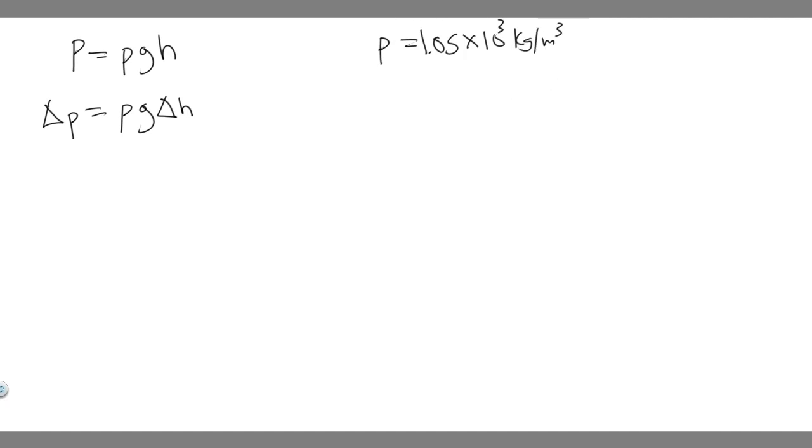So this right here is going to be your density of blood. We know what g is. g is just going to be 9.8 meters per second squared. And then the height change, we know what it's changing from. It's going to start at 0. Or the difference between the two is just 1.7 meters.